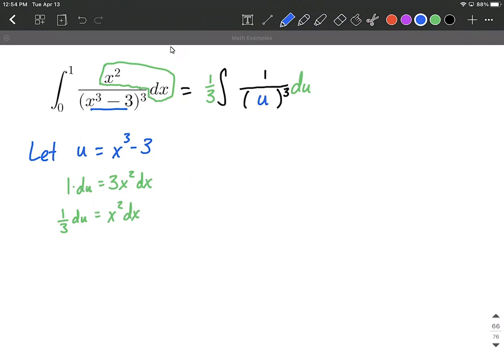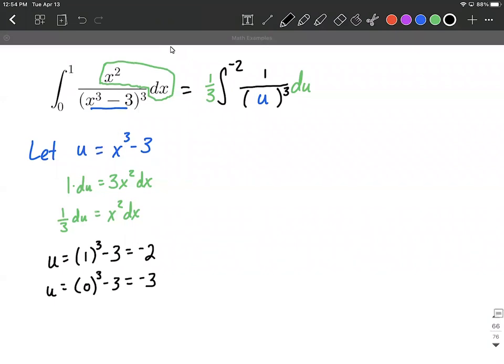Now the bounds of integration were initially from 0 to 1 but those were x values and we switched our variable over to u values. So what we want to do is use our equation, the let statement where we let u equal x cubed minus 3, and off to the side here I'm going to go ahead and say well I want a u value when I plug in 1. So I'm going to go ahead and substitute that in to the let statement. So replace the x with our x value of 1 and we get 1 cubed minus 3 which is 1 minus 3 makes negative 2 will be our upper bound for integration and then another u value when we substitute in a 0 into that let statement. It's going to be equivalent to 0 minus 3 will make negative 3 will be our lower bound in u values.